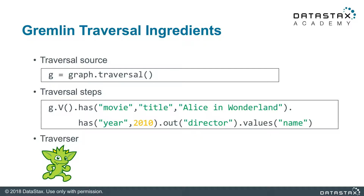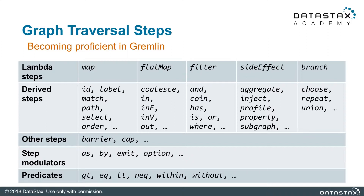Traversal steps define instructions for the traversal, and we will learn a couple of dozens of them. A traverser is an internal object propagating through the traversal to unify the graph and the traversal steps. In other words, what it does is find a solution or a traversal result. To become proficient in Gremlin, we can study individual traversal steps — there are a few dozens of them.